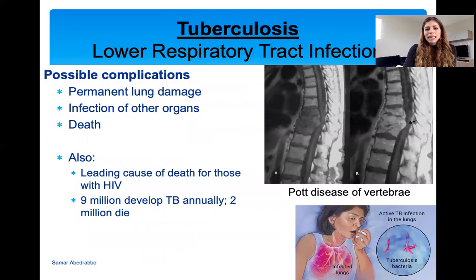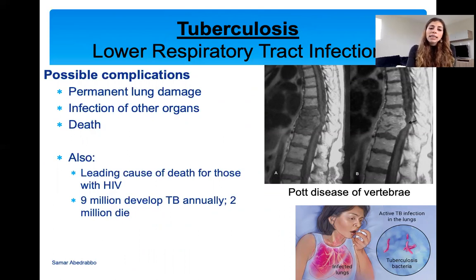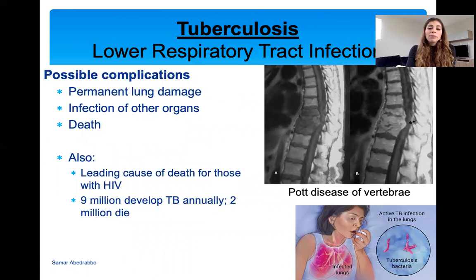Possible complications: mainly lung damage. If TB is not treated, it can lead to lung damage and can spread to other organs causing death. It is the leading cause of death for people with HIV. Nine million people develop TB annually, and two million people die from it — making it a very serious global condition.